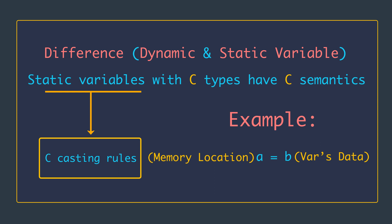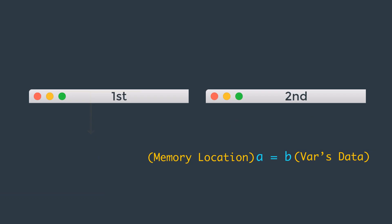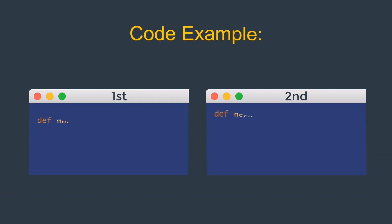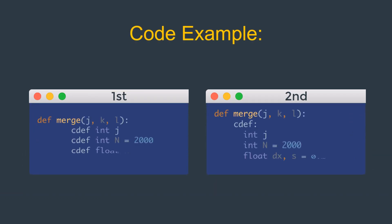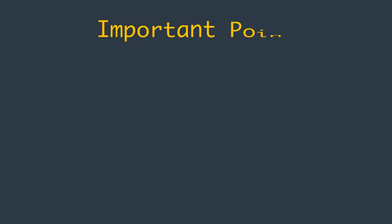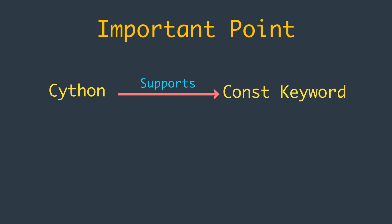Inside a function, cdef statements are indented and static variables declared are local to that function. All of these are valid uses of cdef to declare local variables inside a function. You can see an example code here — the first is the normal way to define a cdef variable, and the second uses the cdef block. Another thing to keep in mind is that Cython supports the const keyword.